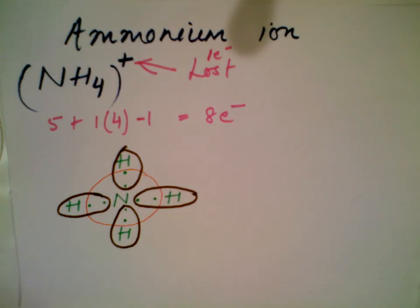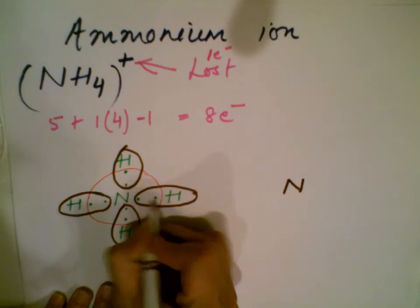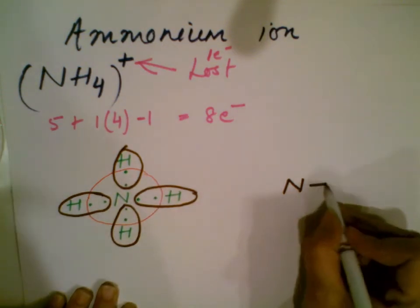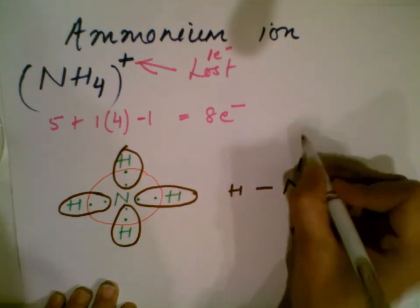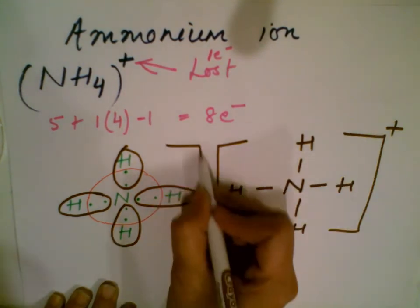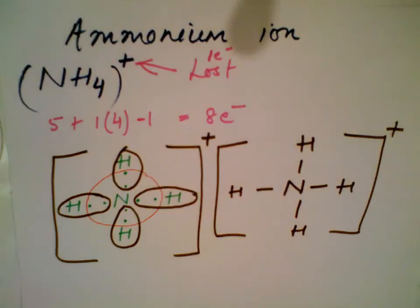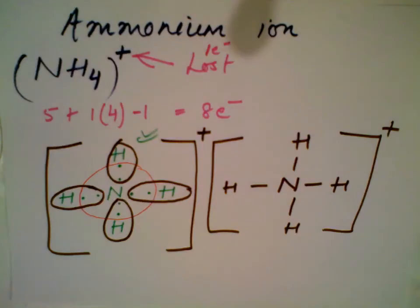Nitrogen and hydrogen are sharing electrons to satisfy the octet. You connect the two dots between atoms into a long dash, which represents a bond. Please don't forget to put the positive charge outside the bracket — we have to show the charge outside the bracket. This is the Lewis dot structure for ammonium.